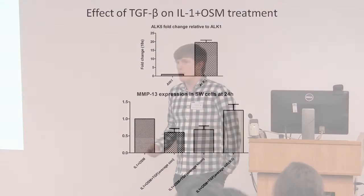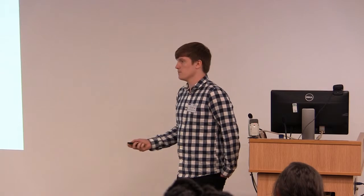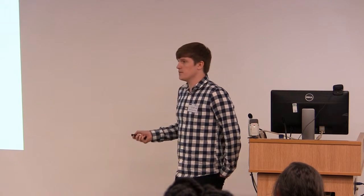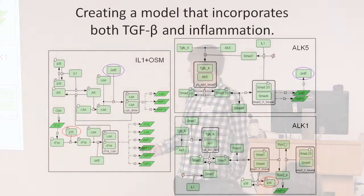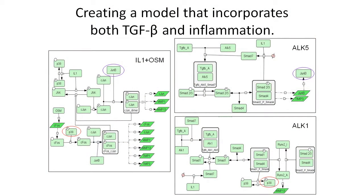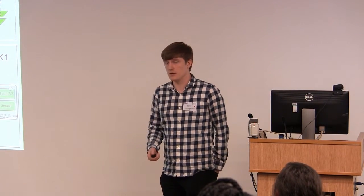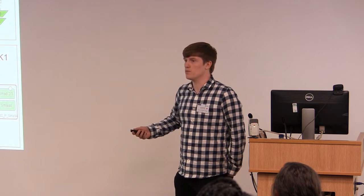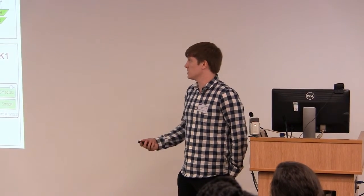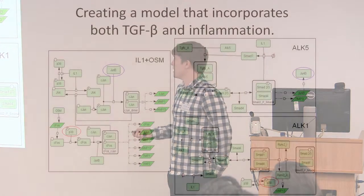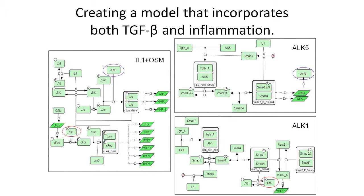This tells us what happens as we age and the signaling moves towards ALK1 — what happens to TGF-beta's effect on inflammation? That's where the modeling comes in. I took two models that Carolyn made previously and modified and combined them. She created a model of TGF-beta signaling in which ALK5 and ALK1 receptors change with age, resulting in differential gene expression and a shift from an anabolic towards a catabolic growth factor. The full model has three parts: the ALK5 system, the ALK1 system, and the IL-1/OSM model which I combined with it.